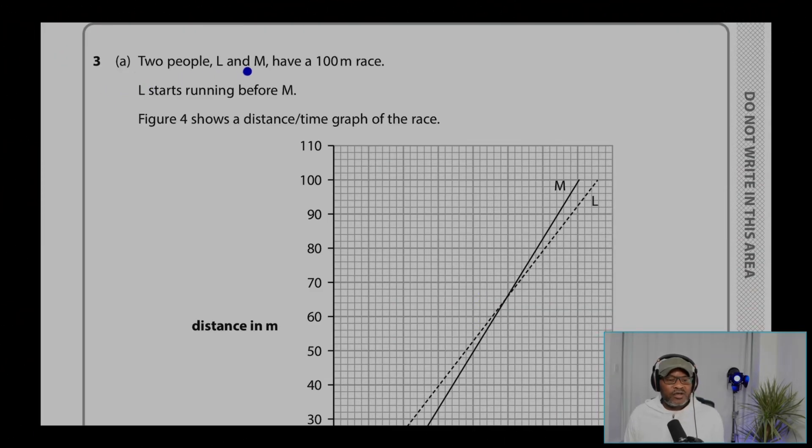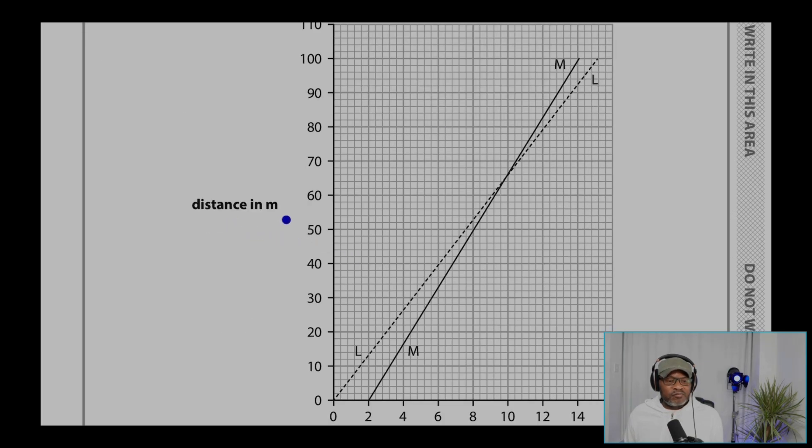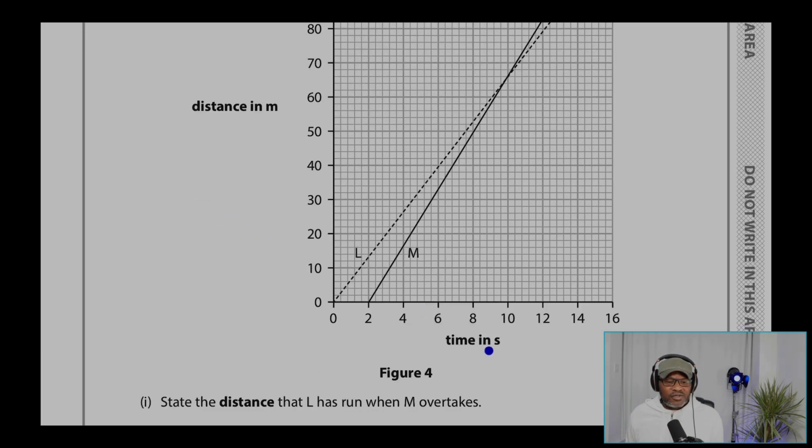3A. Two people L and M have a 100 meter race. L starts running before M. Figure 4 shows a distance time graph of the race. This is distance in meters and time in seconds.